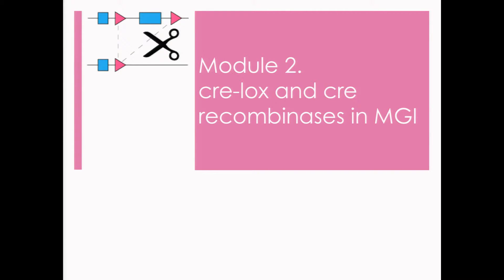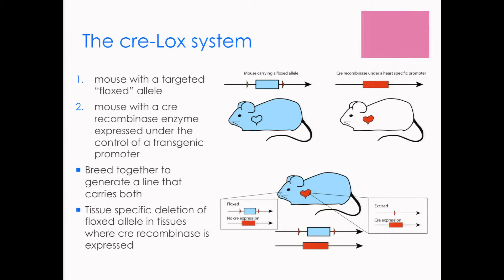CRELOX and CRE recombinases in MGI. CRELOX is a system within genomics that allows tissue-specific genome remodeling. This strategy employs two different mutagenized mice: first, a mouse with a targeted or floxed allele, and second, a mouse carrying a CRE recombinase enzyme, which is expressed under the control of a transgenic promoter and determines which tissues the genome remodeling will occur in.